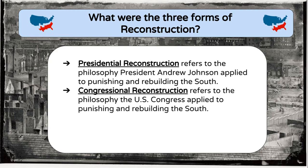Johnson had two goals for Reconstruction. First, he wanted new governments that were loyal to the Union and obeyed federal laws — the Southern governments that existed before and during secession were considered illegitimate and needed to be recreated from the ground up. Second, slavery had to be abolished once and for all. These goals were relatively consistent with Abraham Lincoln's vision for Reconstruction, but Lincoln did not live to carry out his own vision.